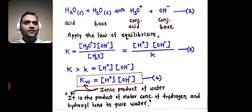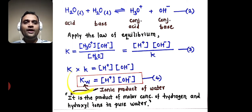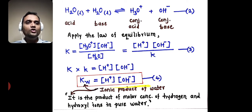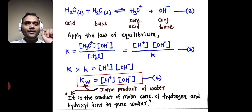Now take that small K with capital K. So K into K gives us molar concentration of H+ into molar concentration of OH-, and that K into K is nothing but KW. KW is the ionic product of water. It is equal to the molar concentration of H+ into molar concentration of OH-. In words, ionic product of water is the product of molar concentration of hydrogen and hydroxyl ions in pure water.